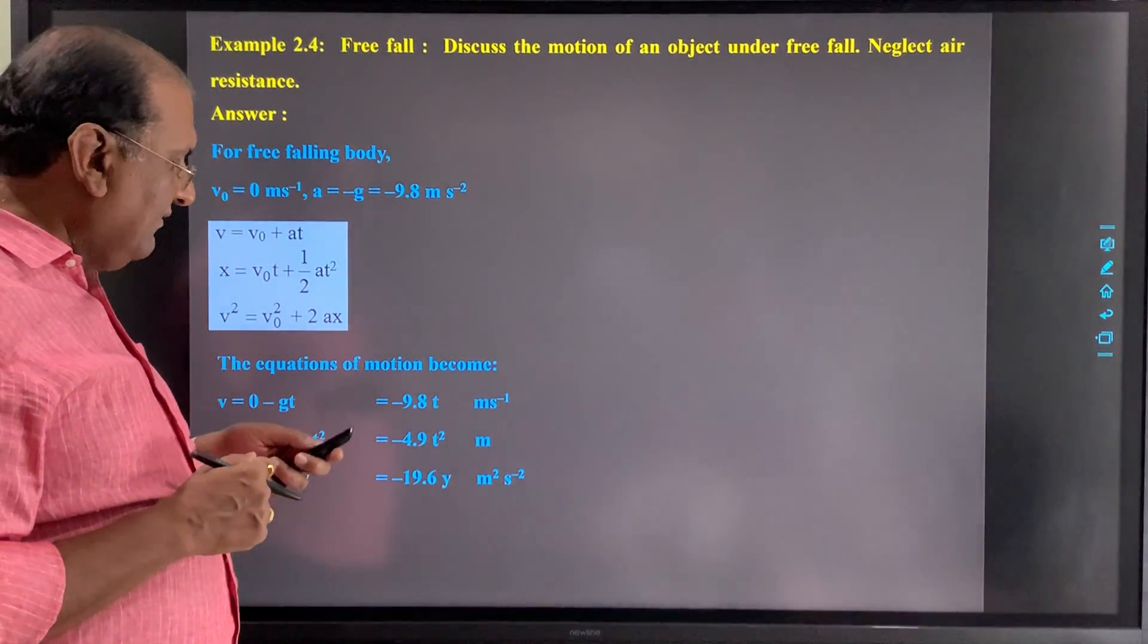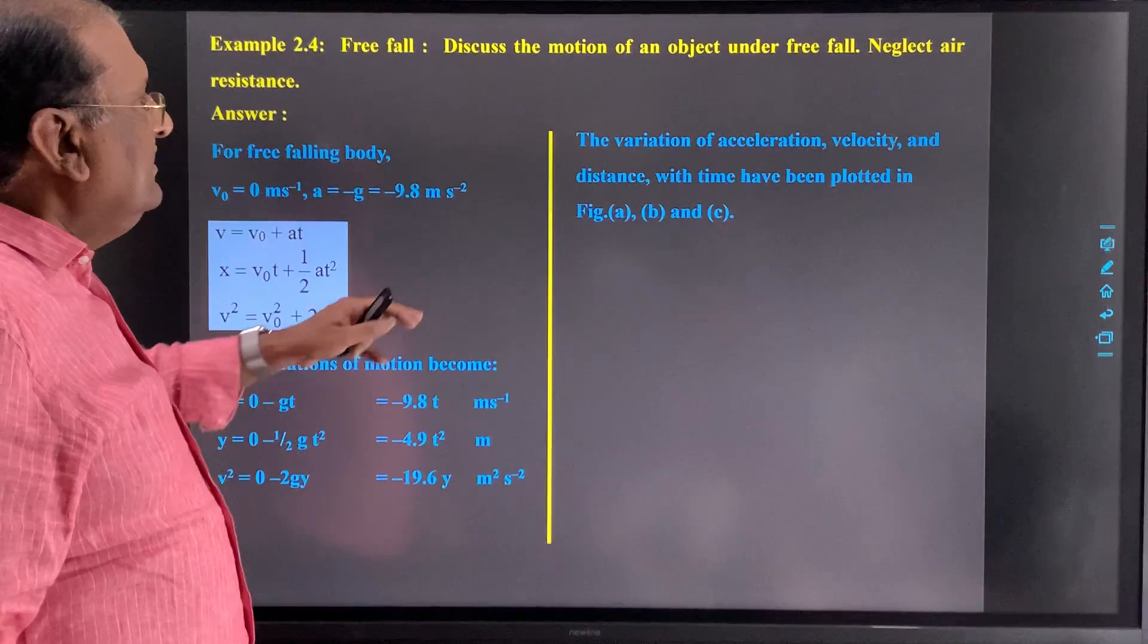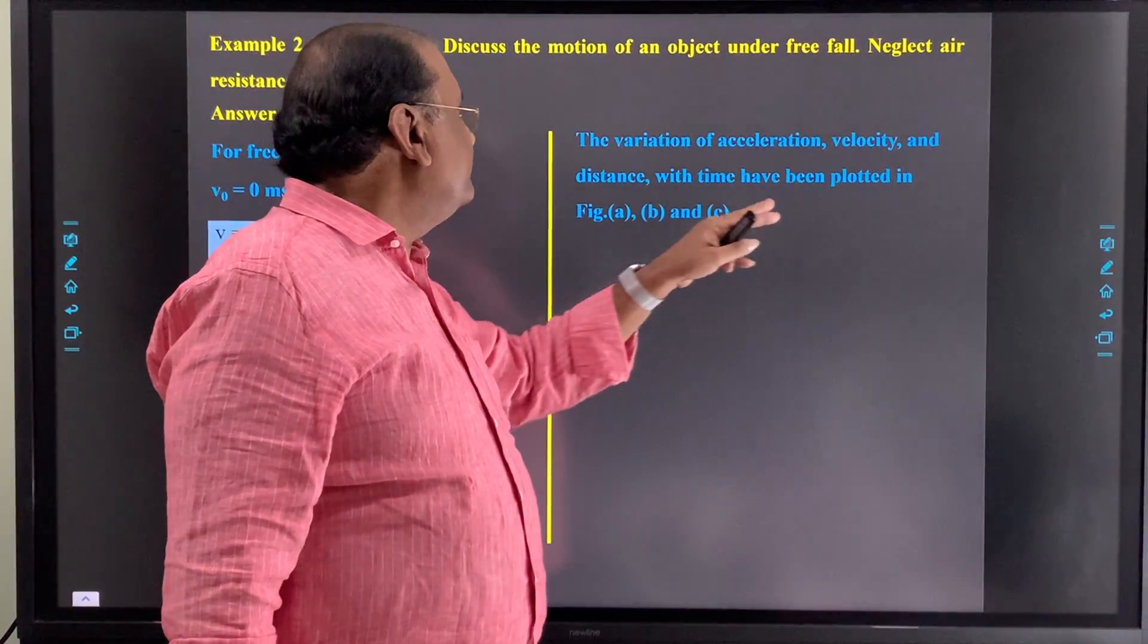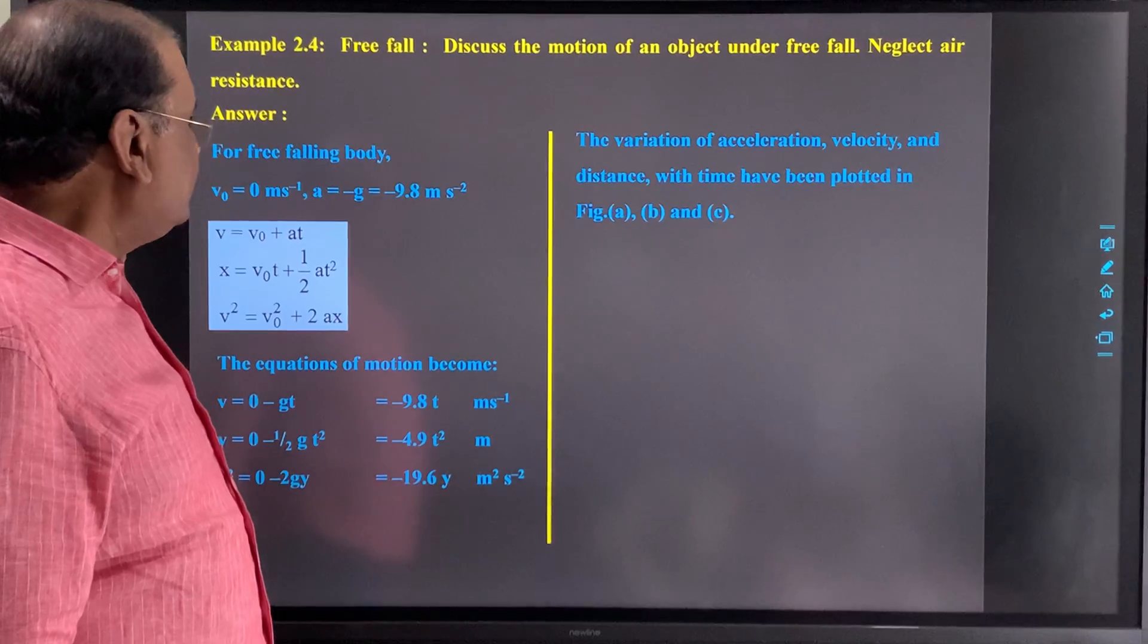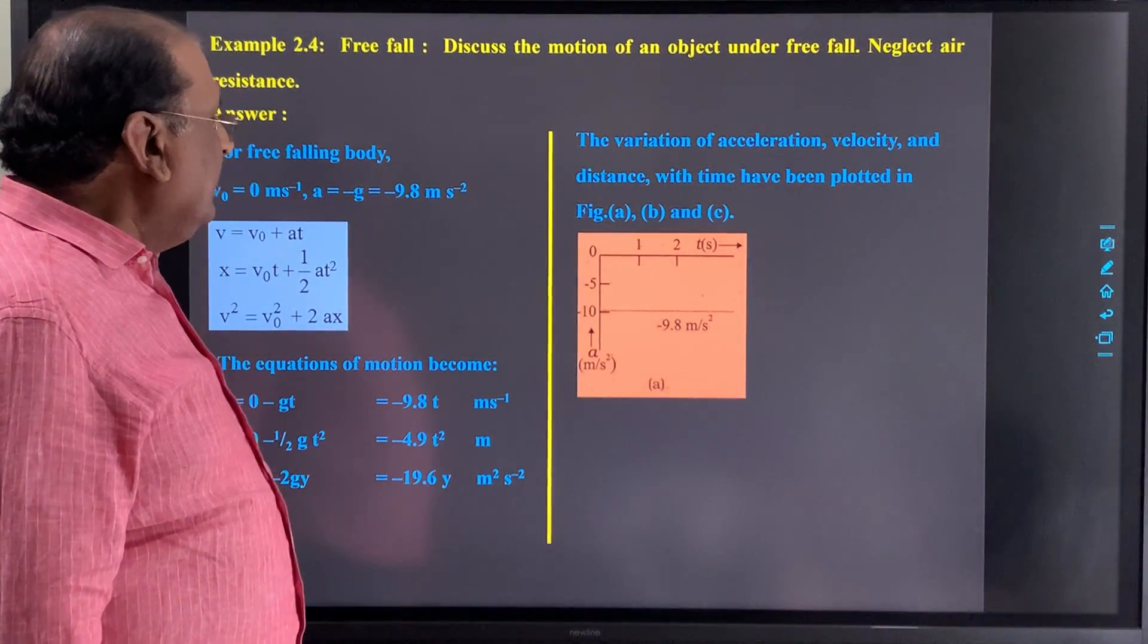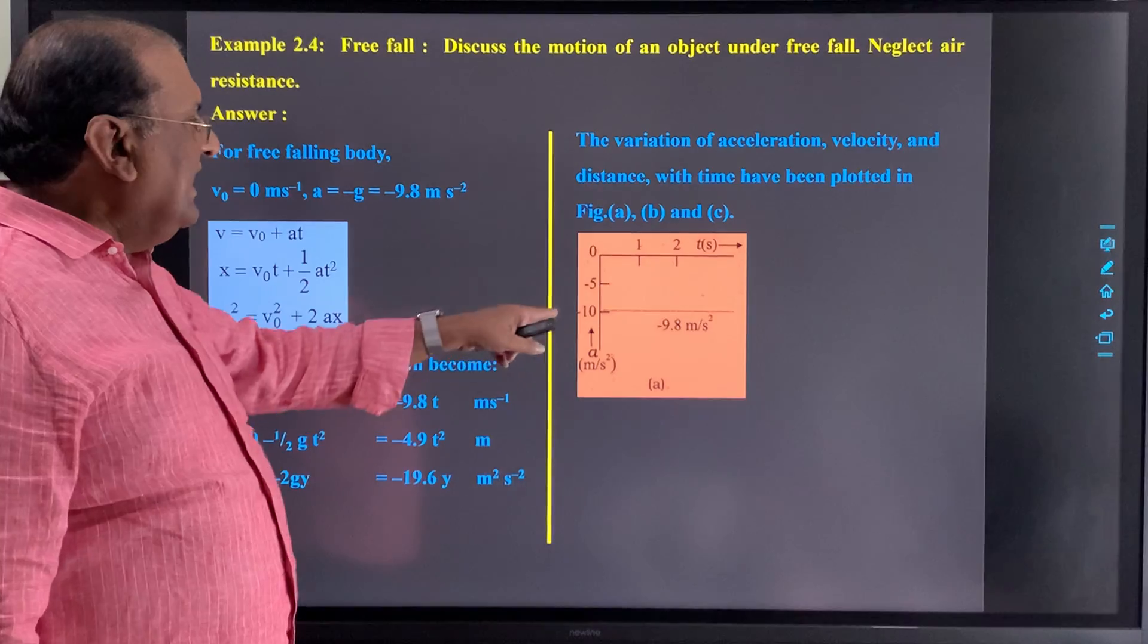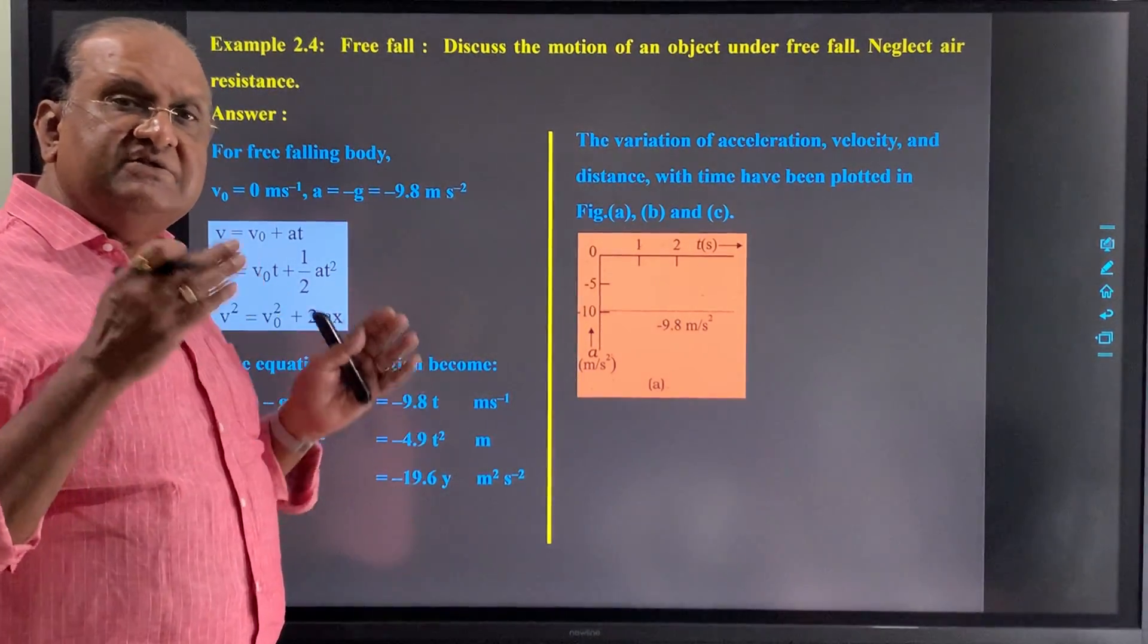Now see the variation of acceleration, velocity, and distance with time that we can plot as shown in the figures. First, acceleration versus time. This one is constant acceleration because this motion is under the effect of gravity.